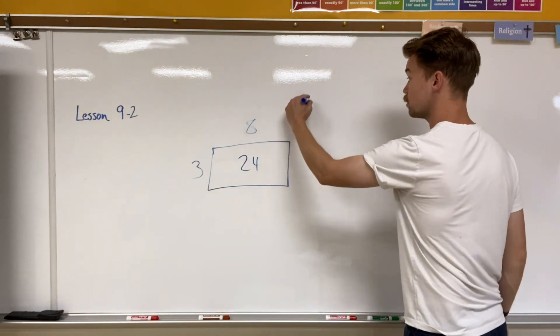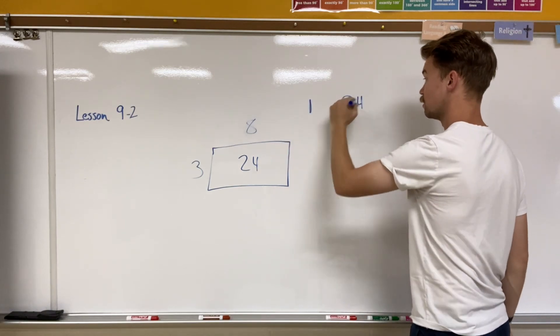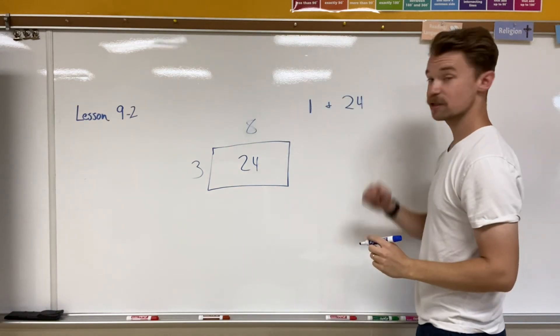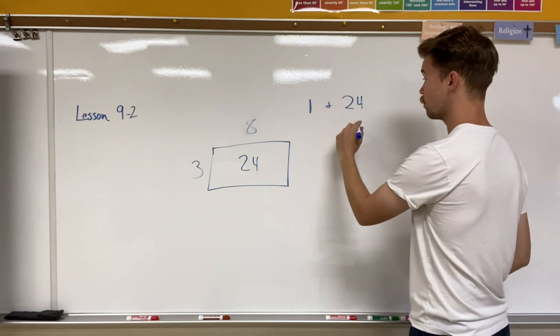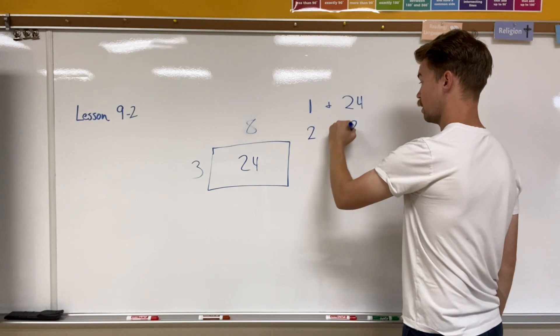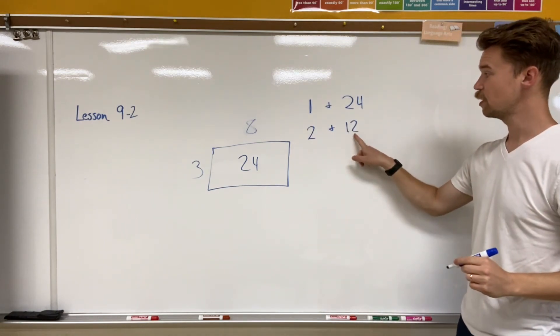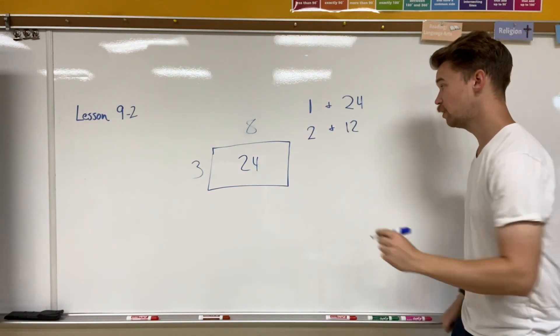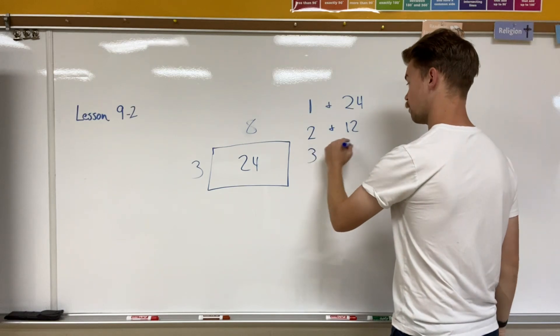We know that one times anything is that number. So one and 24 is one factor pair. 24 is an even number, so two times 12. If I take 12 times two, I get 24. Three and eight, we already figured that out.